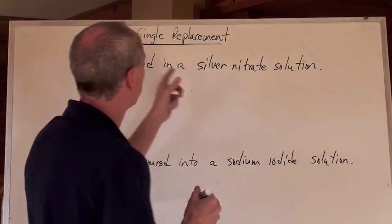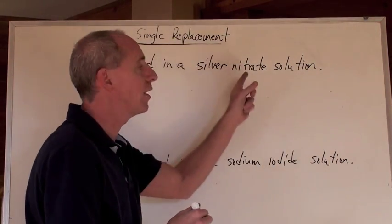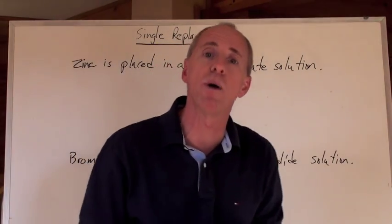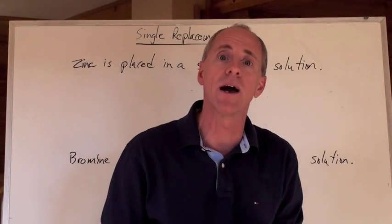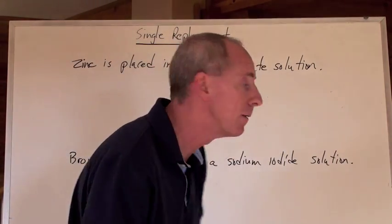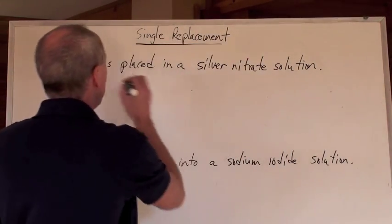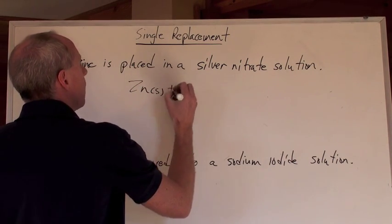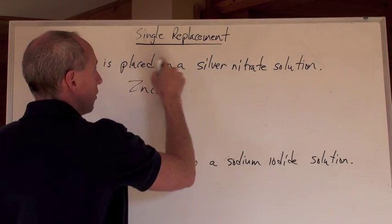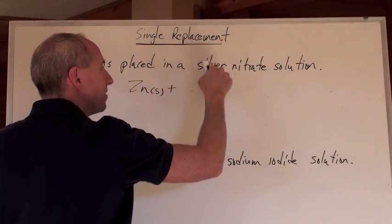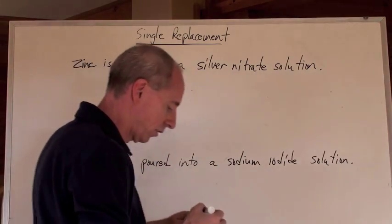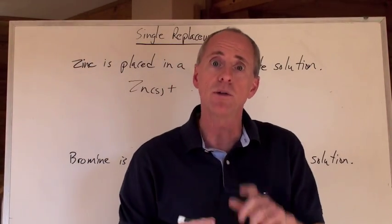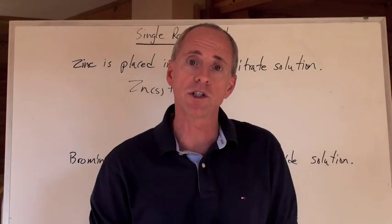Zinc is placed in a silver nitrate solution, and now we're getting into those polyatomic ions. So zinc — Zn, solid — reacts with silver nitrate solution. Silver is Ag with a positive 1 charge.